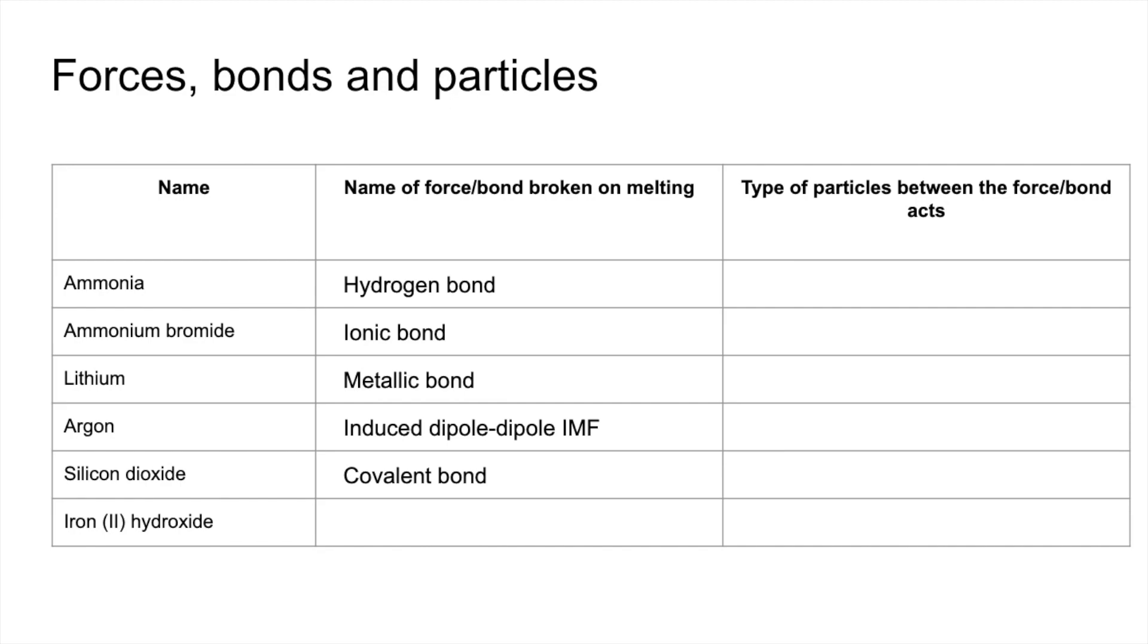And iron(II) hydroxide, like ammonium bromide, it's the ionic bond. So what type of particles now is the force acting between? In ammonia, the hydrogen bond acts between the NH3 molecules. In ammonium bromide, the ionic bonds exist between ammonium and bromide ions. In lithium, the metallic bond exists between lithium 1+ ions and delocalized electrons.